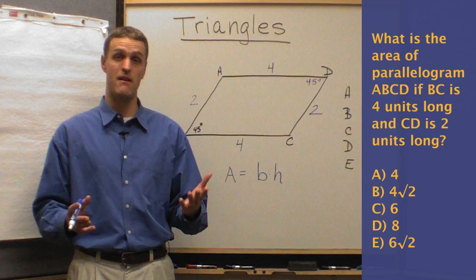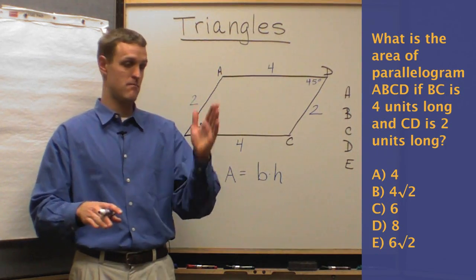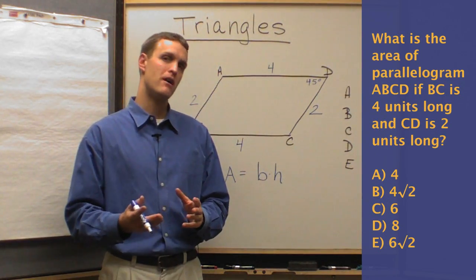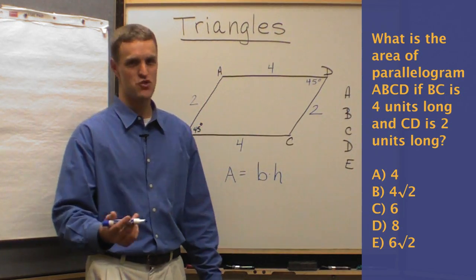Now for a rectangle, it would be very easy, right? Base times height is just kind of the bottom and the side and it's already 90 degrees. With a parallelogram, what do we have to do? Drop an altitude. Just like we saw in the last example with the equilateral triangle, we've got to drop that altitude down.